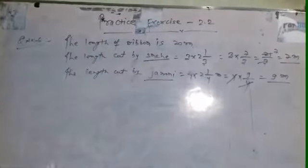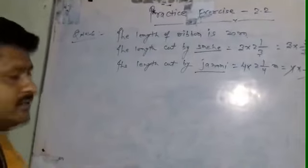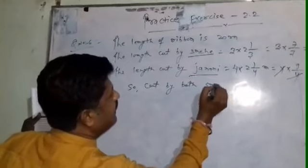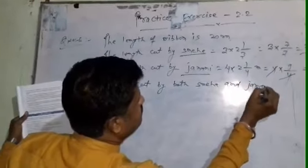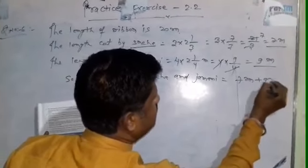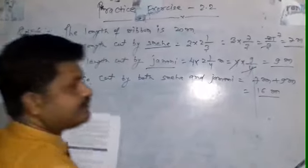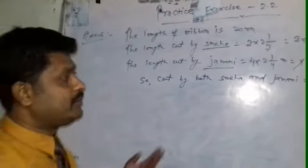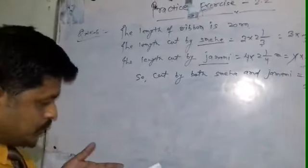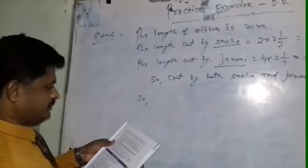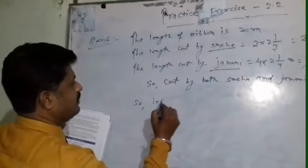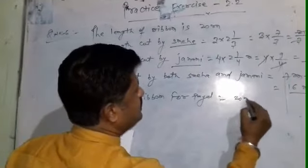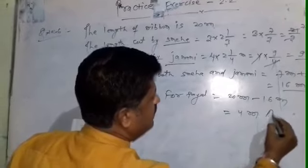Seven meters is cut by Isneha and nine meters is cut by Janani from the twenty meter ribbon. The total cut by both Isneha and Janani is 7 plus 9, which equals 16 meters. From 20 meters, if both girls cut 16 meters, we have only 4 meters remaining. Left ribbon for Pile equals 20 minus 16, which equals 4 meters. This is your answer.